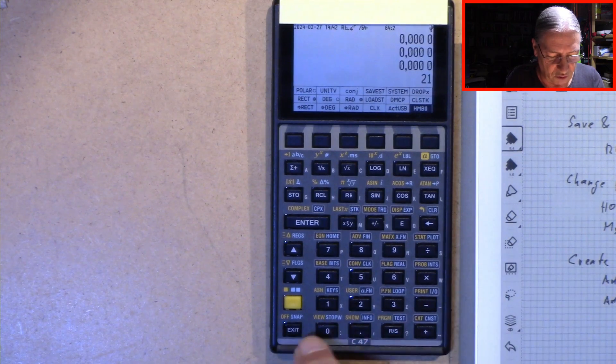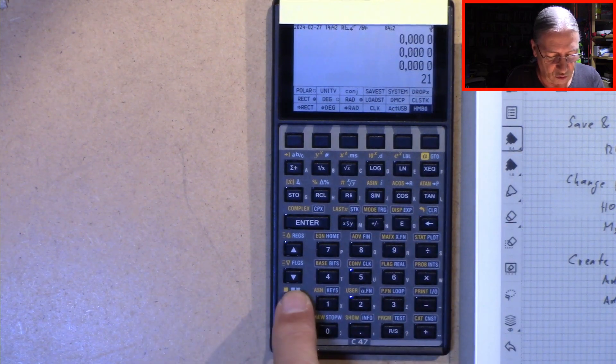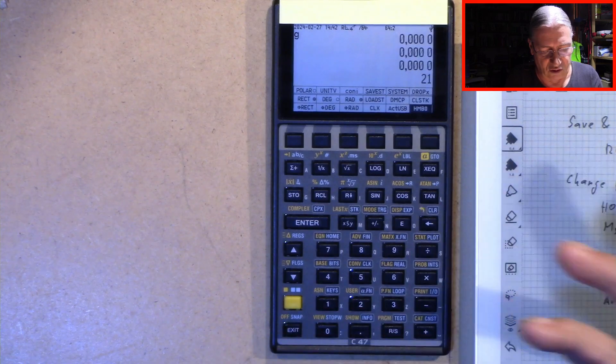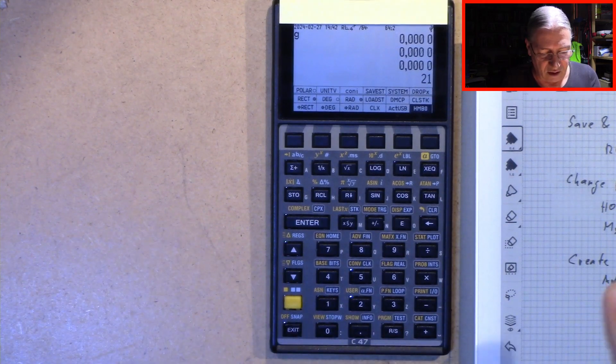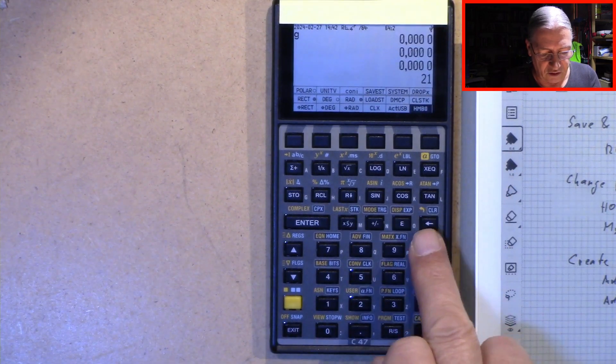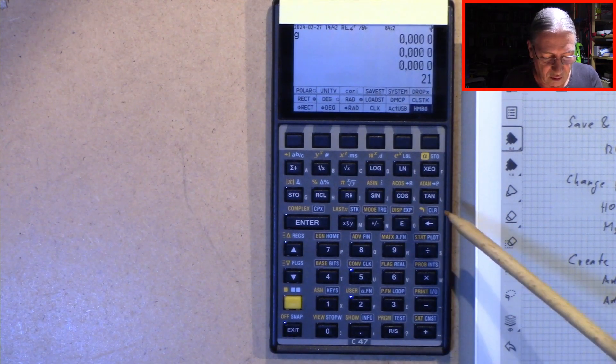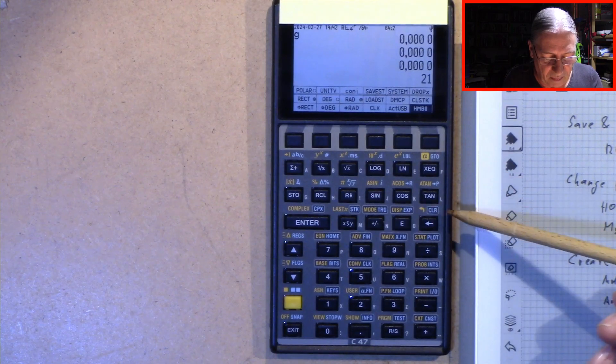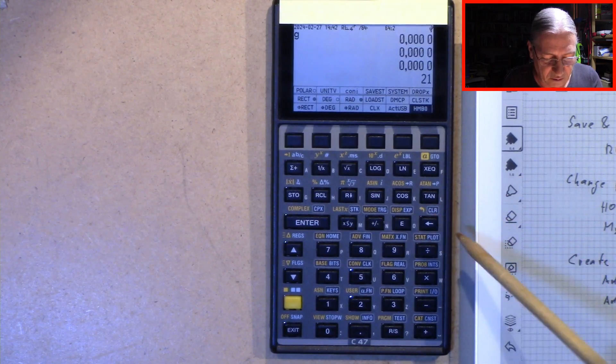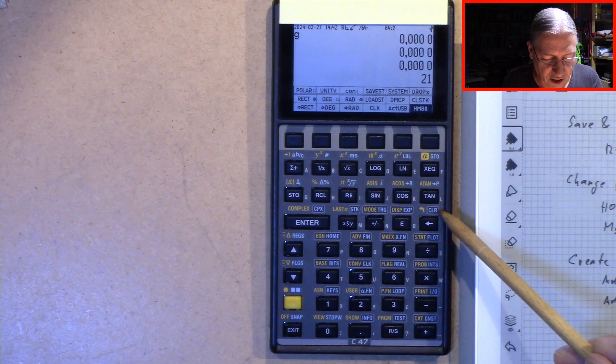So to do this reset we press two times shift which is called a G shift. And now we have access to the clear menu.